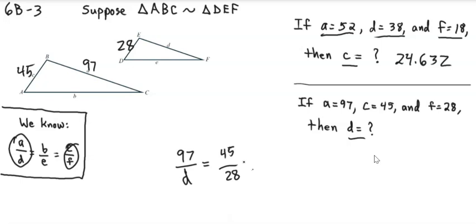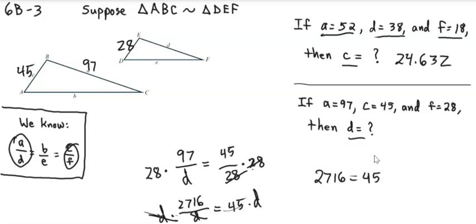First thing I'm going to do is multiply by 28 on both sides. So I now have 2716 over D is equal to, well, over here, the 28 is going to cancel the denominator, and all we're going to have left is 45. Now we're going to multiply by D on both sides. Over on the left side, it's going to cancel the denominator. Now we have 2716 is equal to 45D.